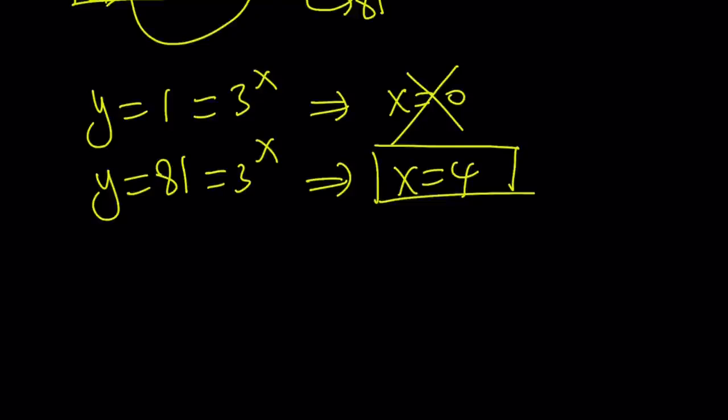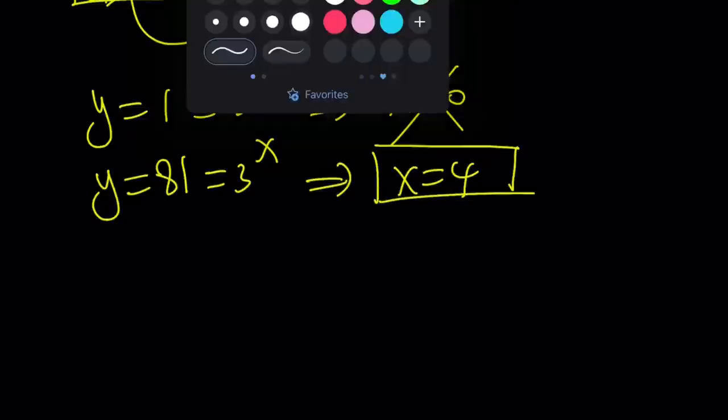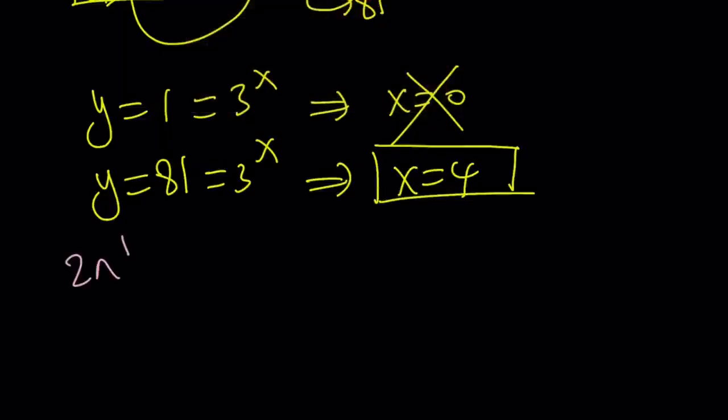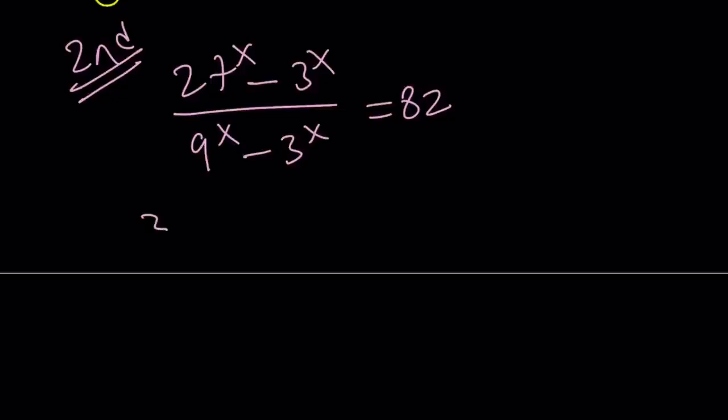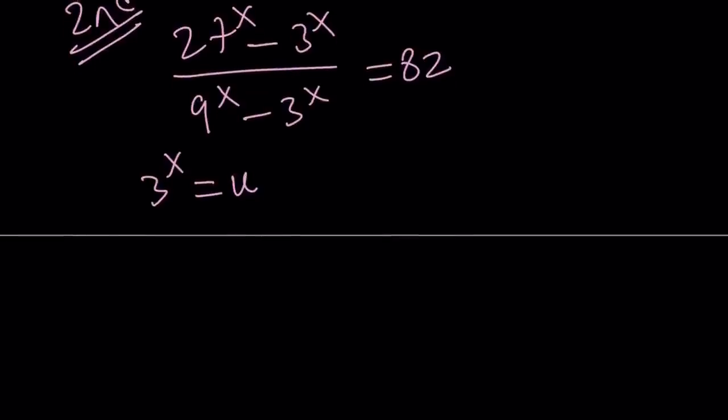Or you can use a second approach. The second method or approach uses the following. One more time, I'm going to rewrite the original problem so we can start fresh. This is our original equation. And we said, let 3 to the power of x be y. Or how about u? This time, let's call it a different variable because it's a different method.